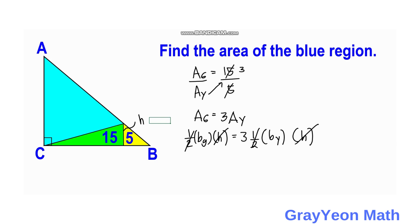And we can say that 3 base of the yellow is equal to the base of the green. Okay, so we can write it here: base of the green is equal to 3by, and this is by.